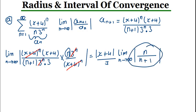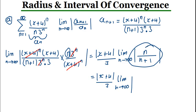So the limit evaluates to 1, giving us the expression X plus 4 divided by 3 times 1, which equals X plus 4 divided by 3.